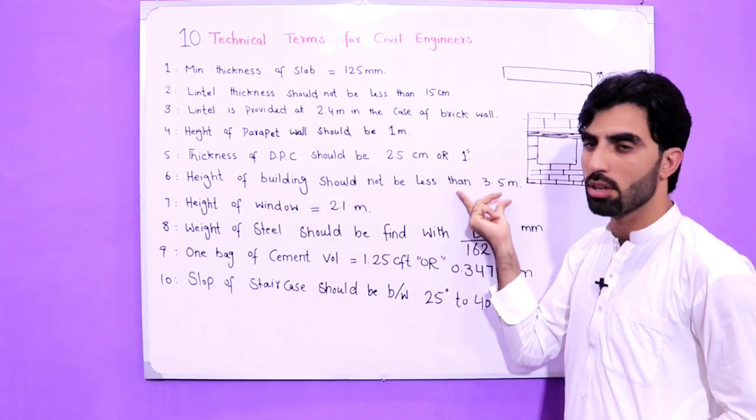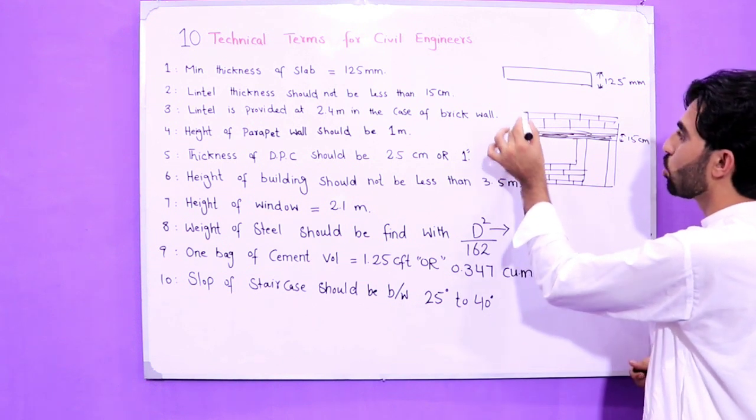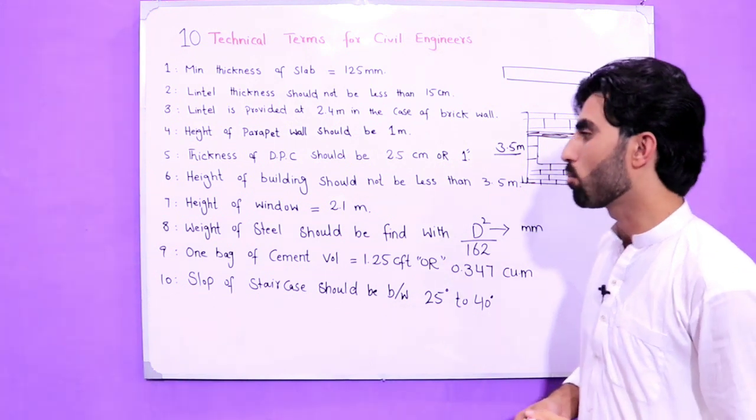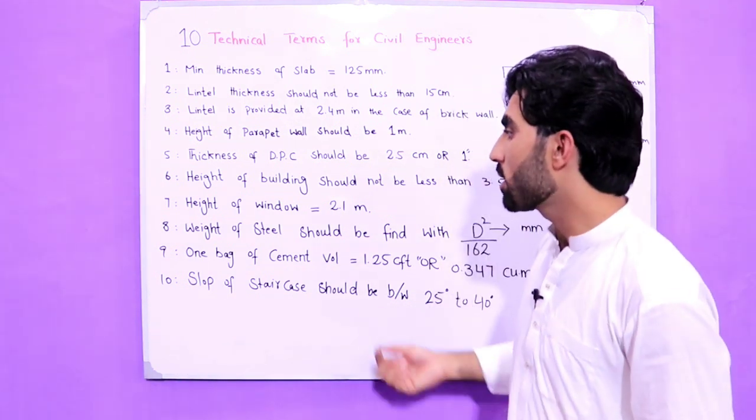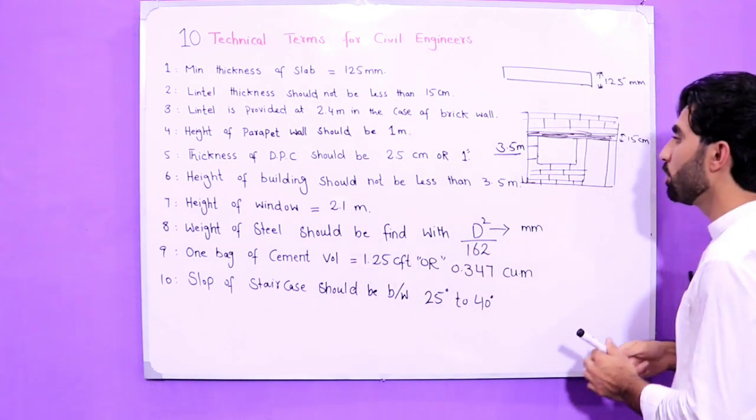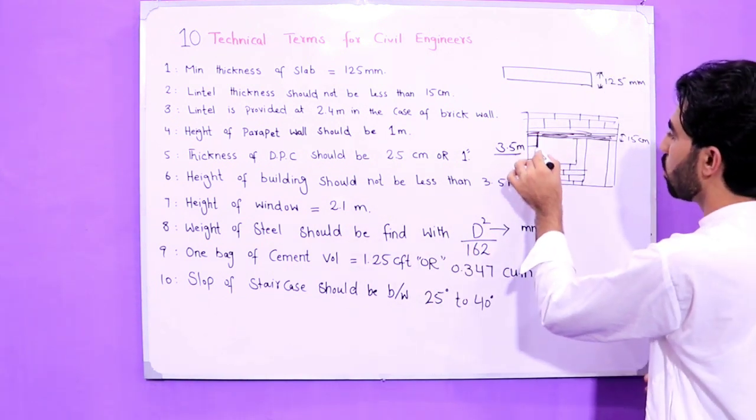The sixth one is height of building should not be less than 3.5 meters. This is an important point. The seventh one is height of window should be 2.5 meters.